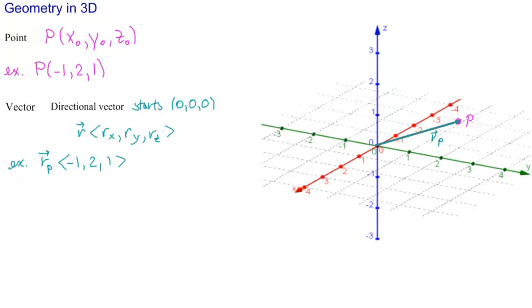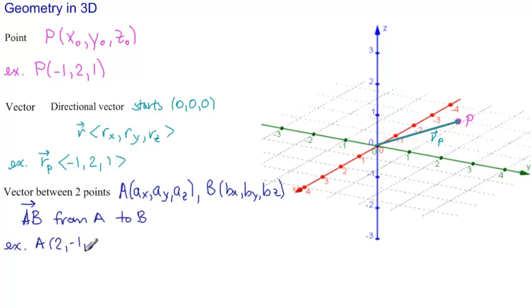And then there's a vector between two points. So let's say we have A, its coordinates, we're going to write AX, AY, AZ, and B, BX, BY, and BZ. And we usually write the vector with AB and an arrow. And that means that it's from A to B. So let's see an example of that. A, 2, minus 1, 2. And B, 2, 0, minus 1.